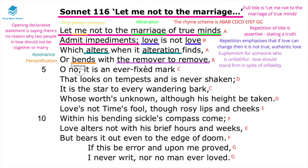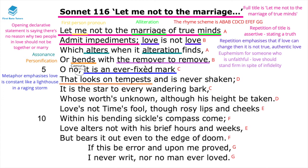In line five, 'Oh no, it is an ever-fixed mark' — the caesura creates a pause for reflection, the speaker's way of emphasizing that love should stay fixed. This is a metaphor suggesting love should be constant like a lighthouse in a raging storm: the storm rages all around but the lighthouse stands firm and unchanging. The personification in 'that looks on tempests' shows that love should not be defeated by the storms of life.